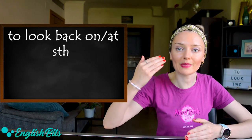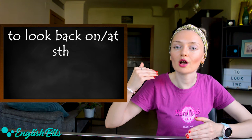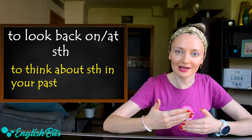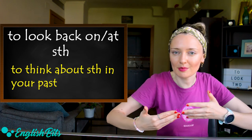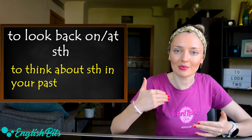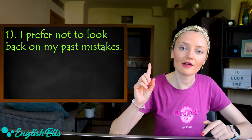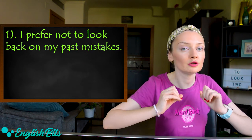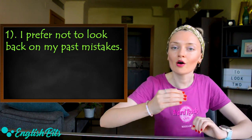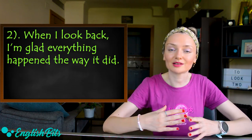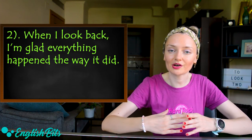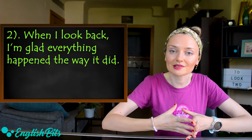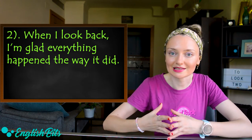Number five: to look back on or at something. It means to think about something in your past. Two examples. First: I prefer not to look back on my past mistakes. And one more example: when I look back, I'm glad everything happened the way it did.